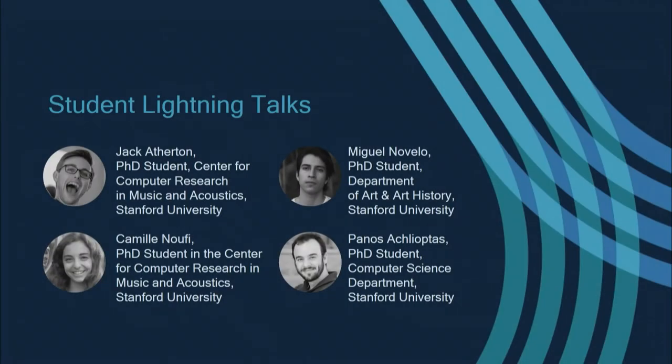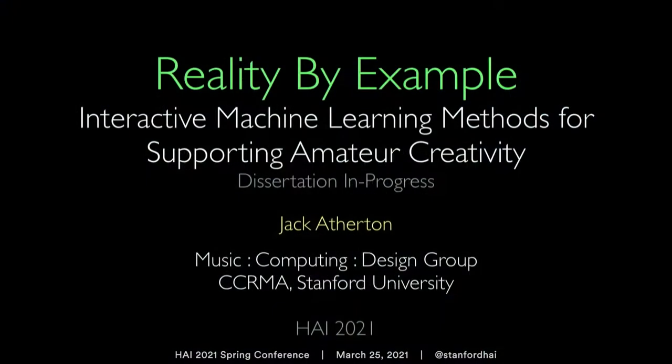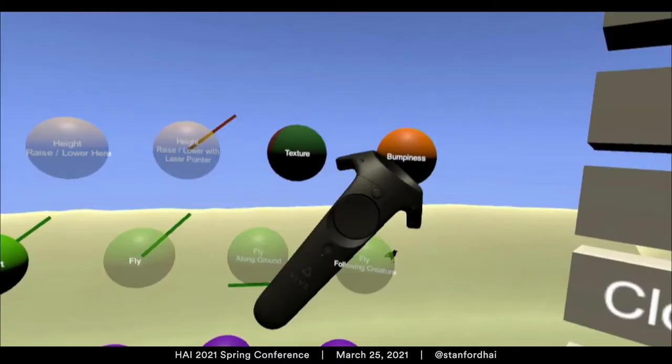Hi, I'm Jack Atherton. This is Reality by Example, a tool for supporting amateur creativity through the use of interactive machine learning. Reality by Example is a tool and meta-environment in virtual reality where people can construct a world by placing small examples of how they would like the world to look and act.